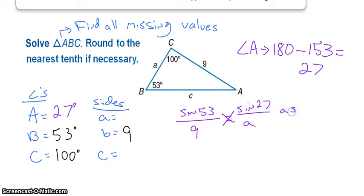So a sine of 53 equals 9 times the sine of 27. To get a all by itself we'll divide by sine of 53 and we'll plug that into our calculator. Do not round until the very end because if you round in too many places you're going to end up being further away from the answer than you would want to be.